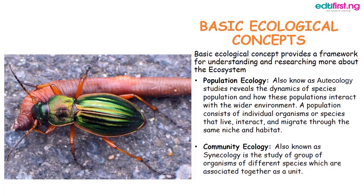The first concept is population ecology, also known as autecology. It reveals the dynamics of a species population and how these populations interact with the wider environment. A population consists of individual organisms or species that live, interact, and migrate through the same niche and habitat.